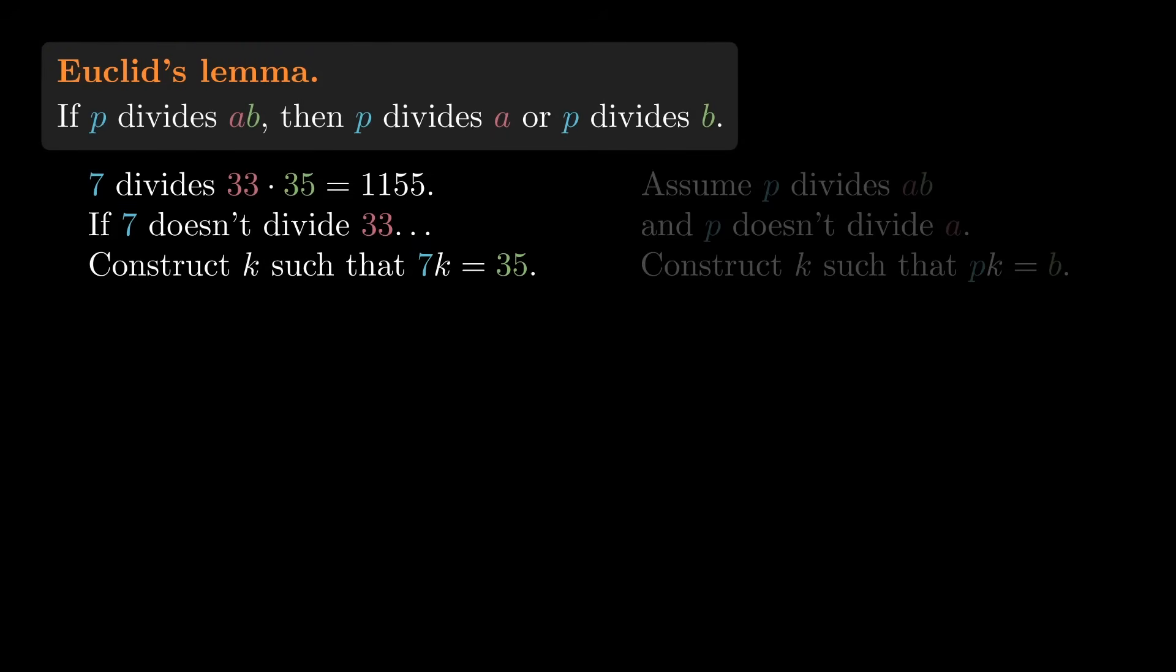Here's the idea, and it's only a little bit clever. Instead of constructing k directly, we'll show that 35 is a multiple of 7 by writing it as a sum of two multiples of 7. Because the sum of two multiples of 7 is also a multiple of 7.